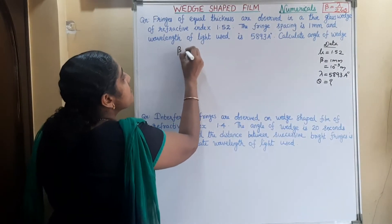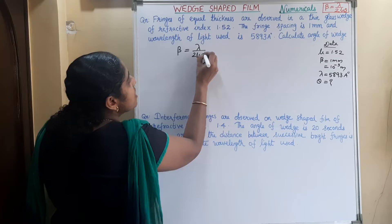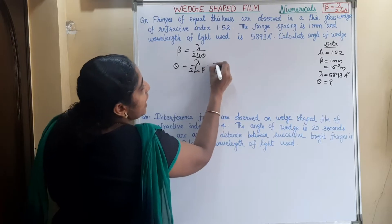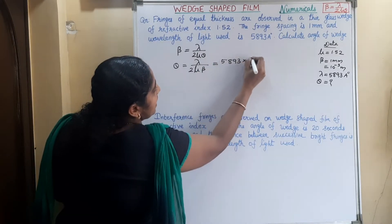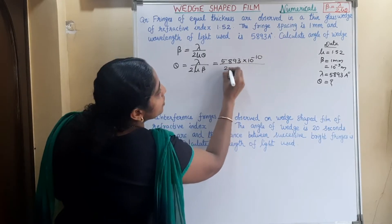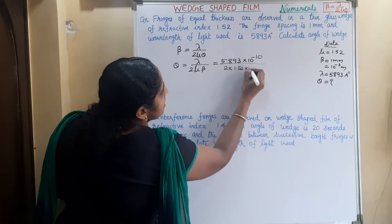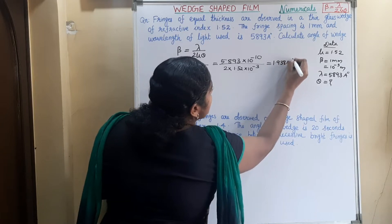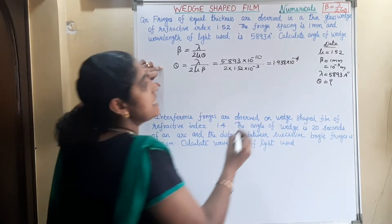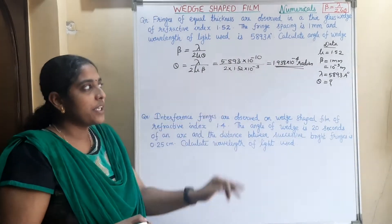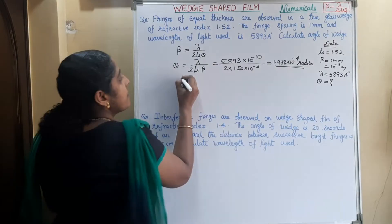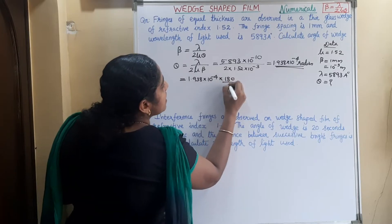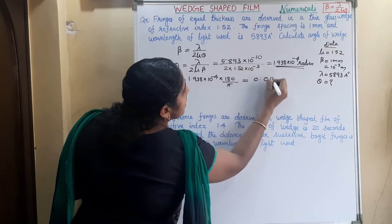The general formula for the fringe width is beta is equal to lambda by 2 mu theta. From this formula, theta is equal to lambda by 2 mu beta. So lambda is 5,893 Angstrom, that is into 10 raise to minus 10 meter, divided by 2 into mu is 1.52, into beta is 10 raise to minus 3 meter. That is equal to 1.938 into 10 raise to minus 4 radian. We can convert this radian into degree by multiplying with 180 by pi, and we will get 0.011 degree.